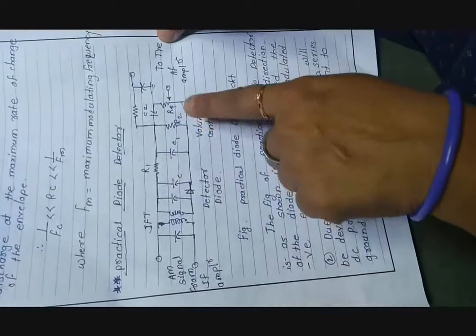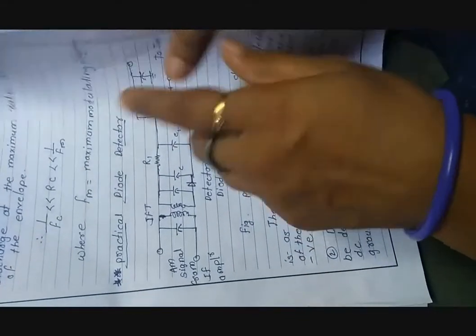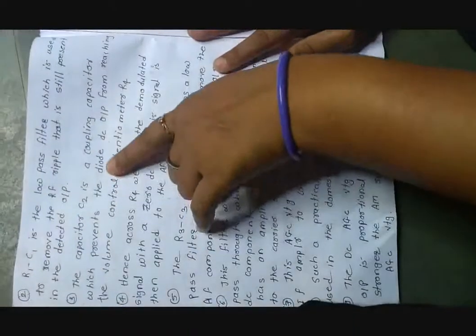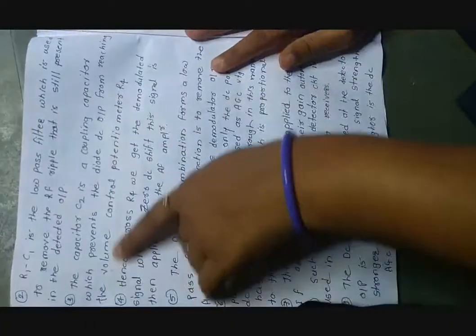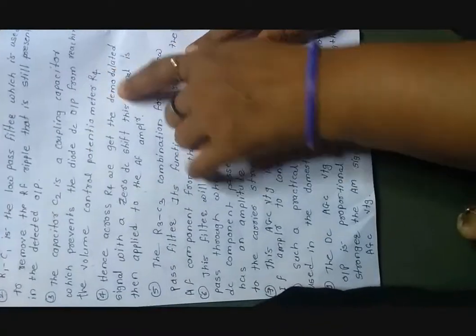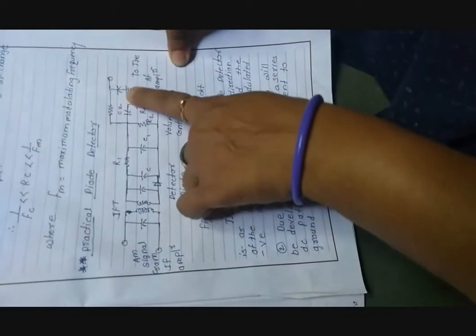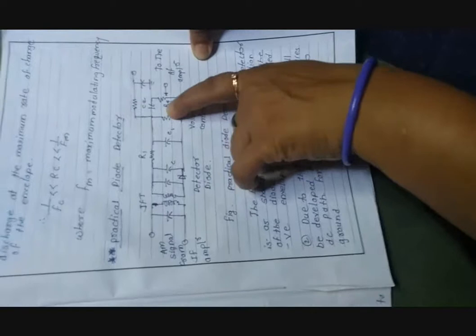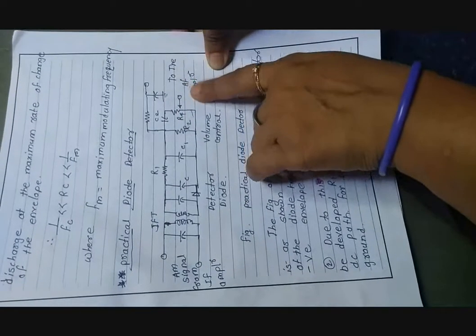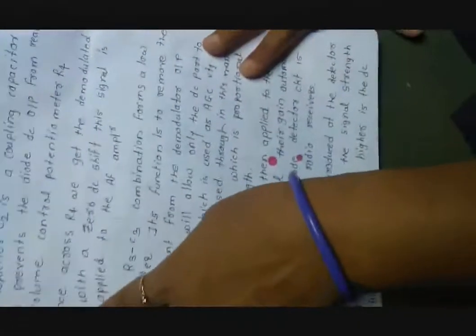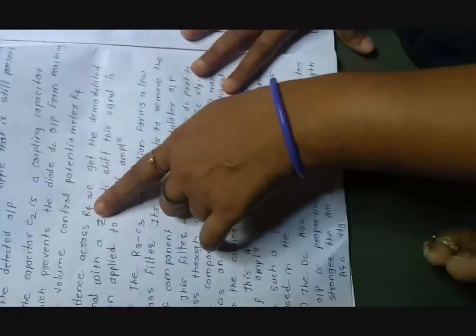The volume control knob provides a clear path for the input signal. Capacitor C2 is the coupling capacitor, which prevents the diode DC output from reaching the volume control potentiometer R4. C2 is used to prevent the DC component from coupling through to R4, which is the audio frequency amplifier volume control knob.